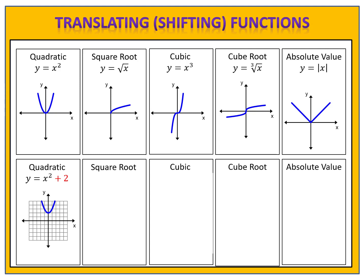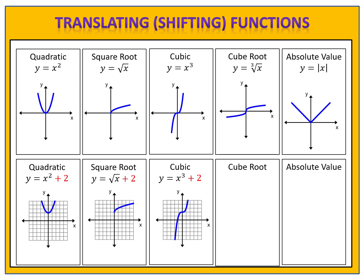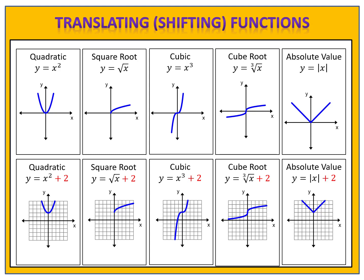All of the others work exactly the same. If I take the square root function and change that to y equals the square root of x plus 2, the square root function is shifted up 2 units. Similarly, if I look at the cubic function y equals x to the third and I add 2, the cubic function shifts up 2 spaces. The same is true for the cube root and for the absolute value. All functions behave the same. So if we want to shift a function up 2 units, we simply add that number to the end of the function.